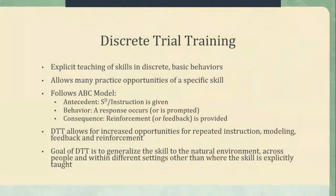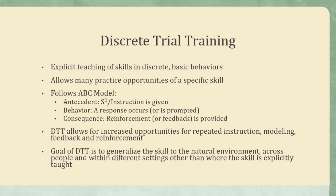So with discrete trial training, just as an overview, it's an explicit teaching of skills in discrete and very basic behaviors. It allows many practice opportunities of a specific skill. It follows the ABC model — that's the antecedent, behavior, and consequence model. Discrete trial training, or DTT, allows for increased opportunities for repeated instruction, modeling, feedback, and reinforcement. The goal of DTT is to generalize the skill to the natural environment, across people, and within different settings other than where the skill is explicitly taught.